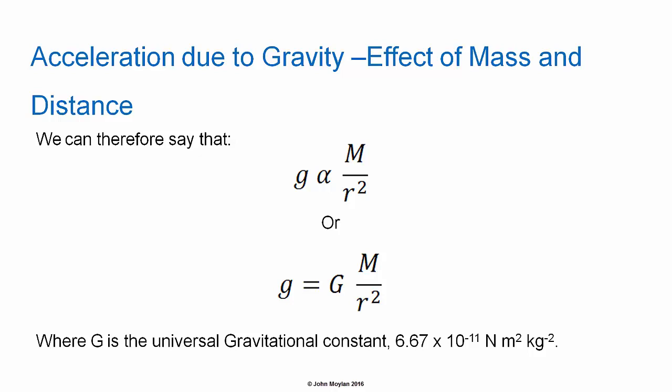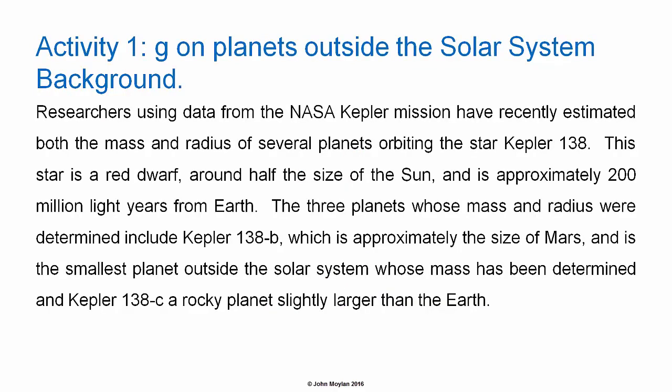Little g — acceleration due to gravity — varies according to where you are in relation to another mass. The first activity looks at determining acceleration due to gravity on the surface of planets outside of the solar system.